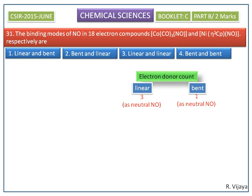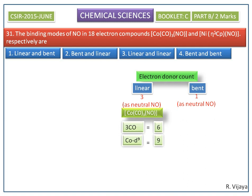Now we do the electron donor count in the neutral method for the first complex. We have three carbonyls, which contribute six electrons. Cobalt contributes nine electrons, giving a total of 15 electrons. Since it is an 18-electron compound, we subtract 15 from 18 to get three electrons. So nitrosyl must donate three electrons to this complex.